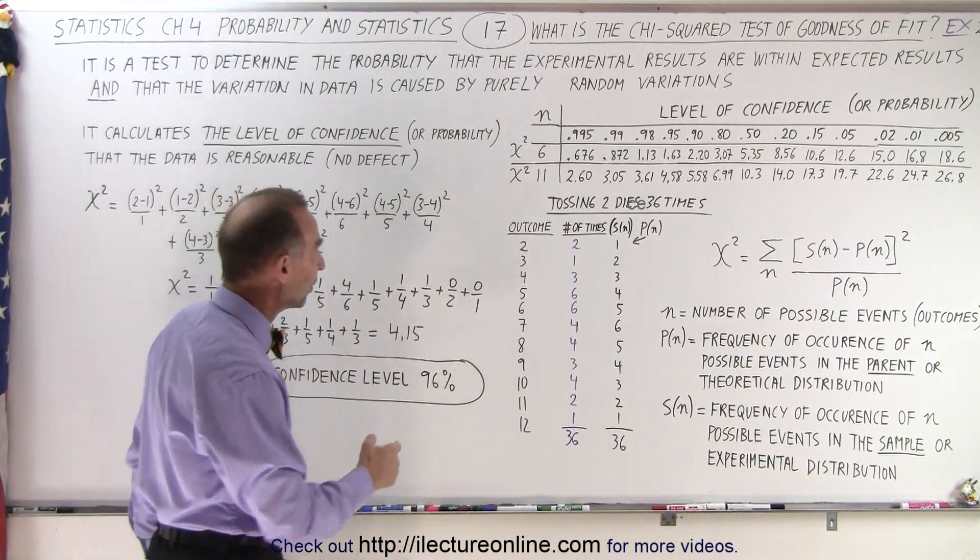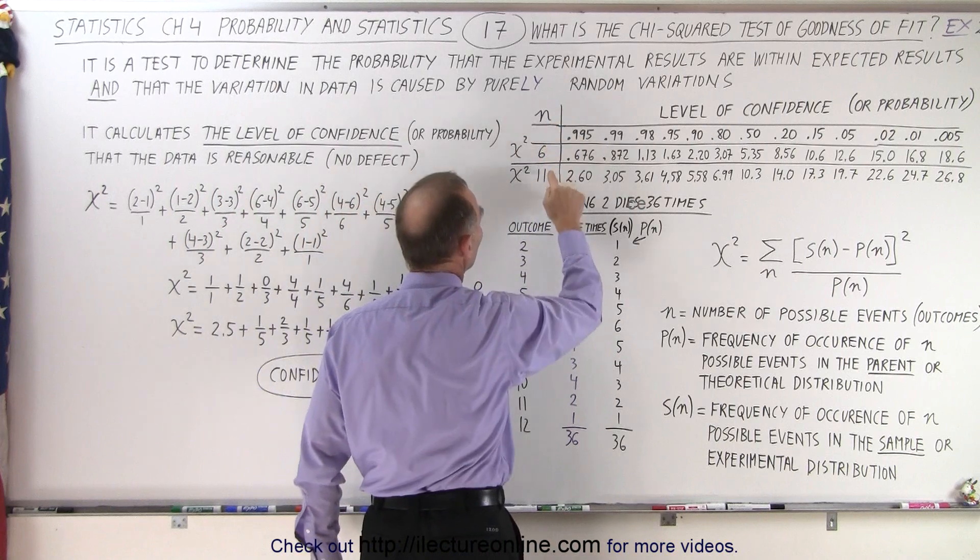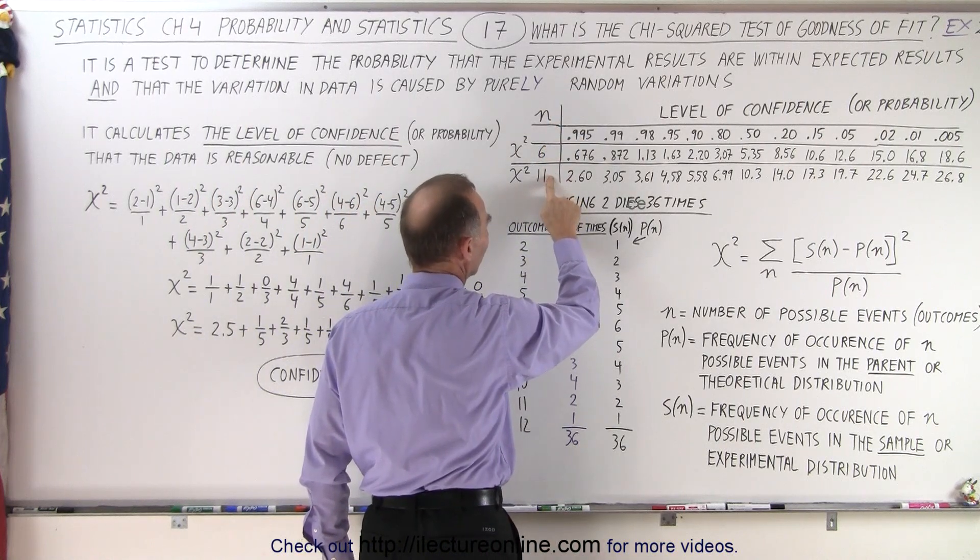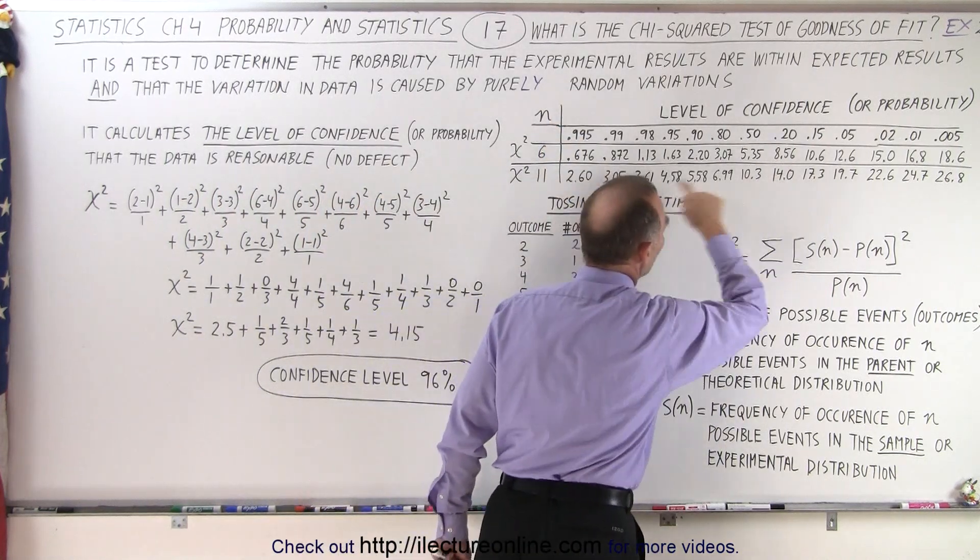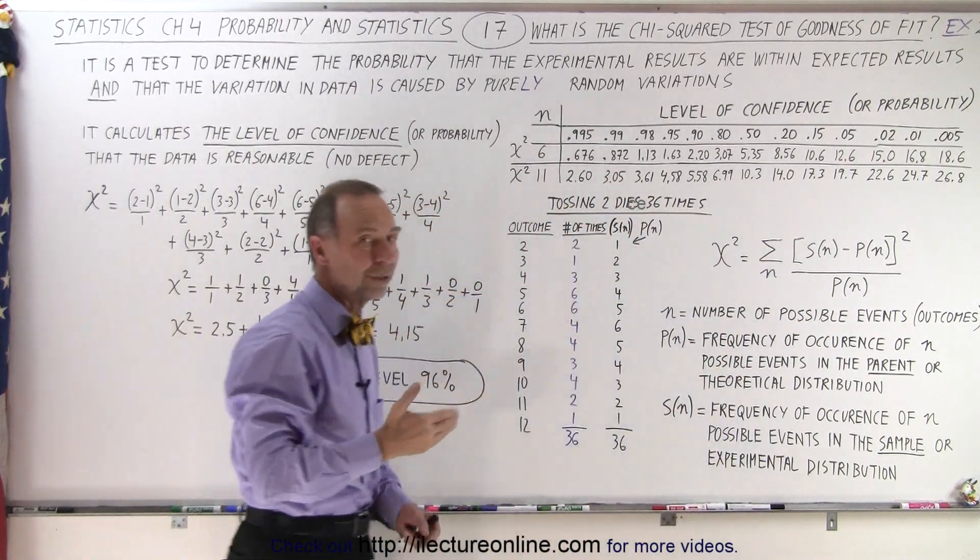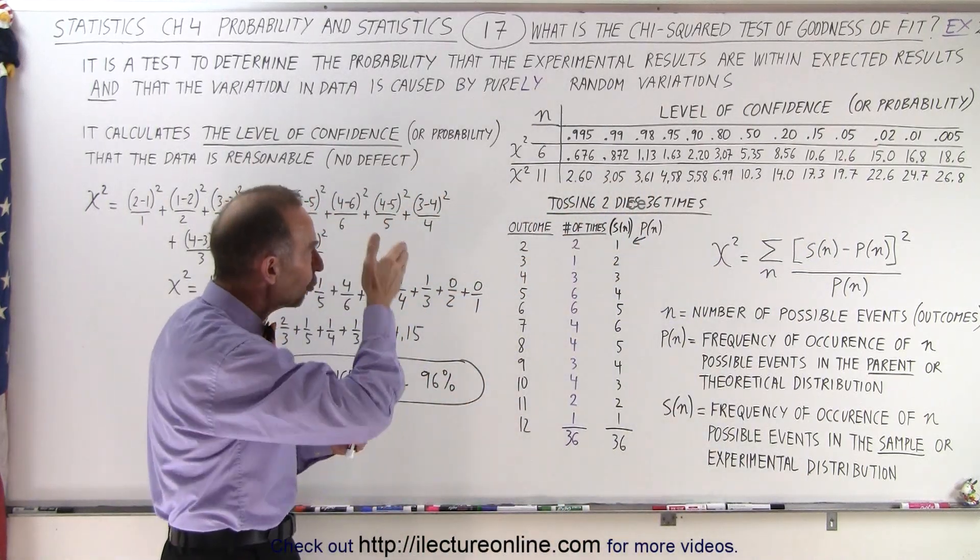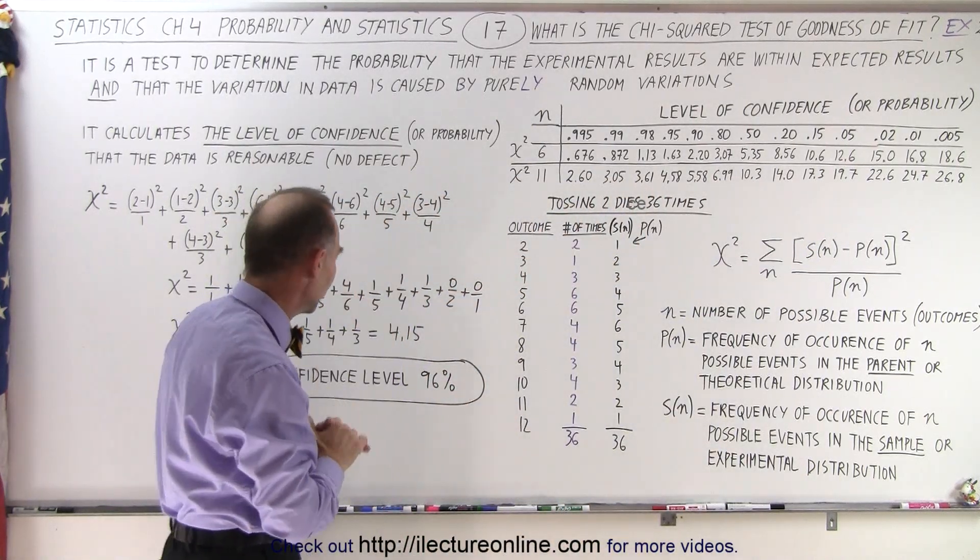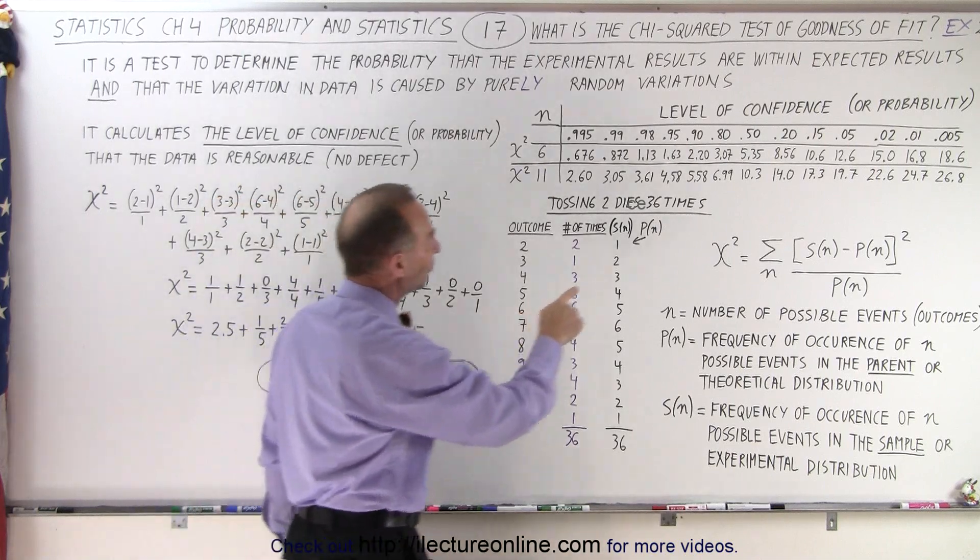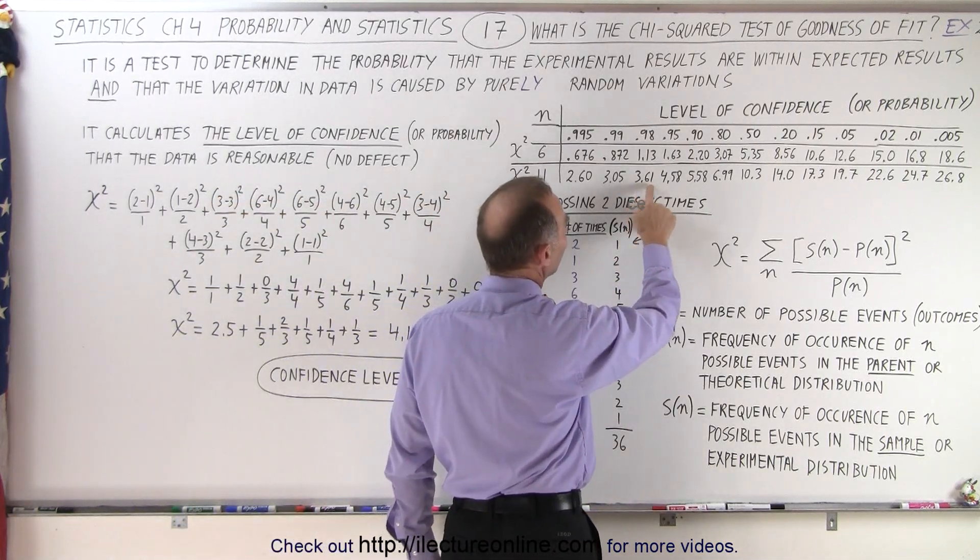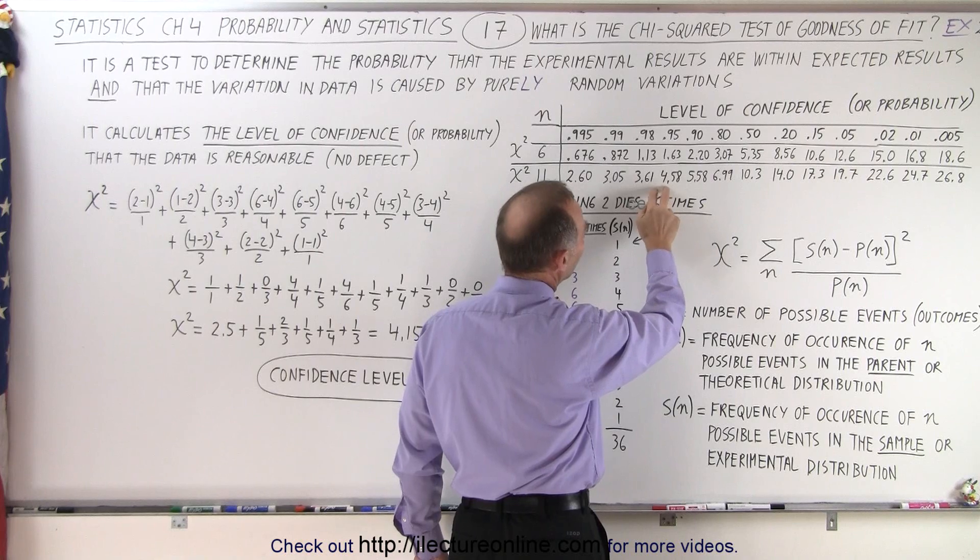So, we take that number, chi-squared, 4.15, and go for the case where we have 11 possible outcomes, and these are the numbers associated with chi-squared that are appropriate or according to certain levels of confidence. So, we looked up 4.15, which is between here and here, so you can see that it's a little bit closer.